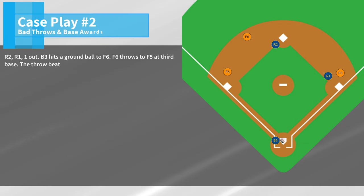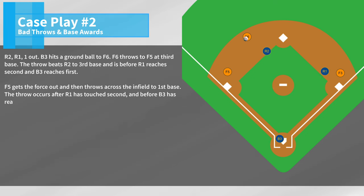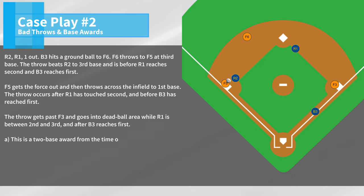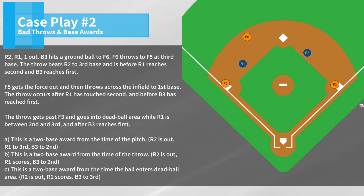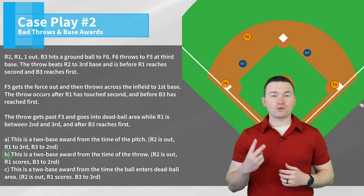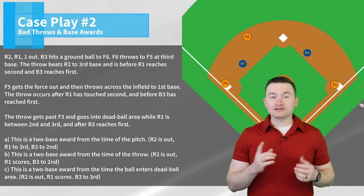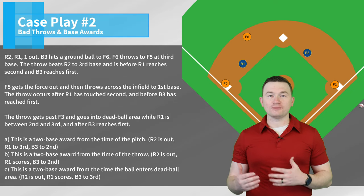Case play number two: R2, R1, one out. B3 hits a ground ball to F6. F6 throws to F5 at third base. The throw beats R2 to third base and is before R1 reaches second and B3 reaches first. F5 gets the force out and then throws across the infield to first base. The throw occurs after R1 has touched second and before B3 has reached first. The throw gets past F3 and goes into dead ball area while R1 is between second and third and after B3 reaches first. The correct answer is B — this is a two base award from the time of the throw. The out being made at third base is the first play by an infielder, so everything after that is a subsequent play enforced from the time of the throw.